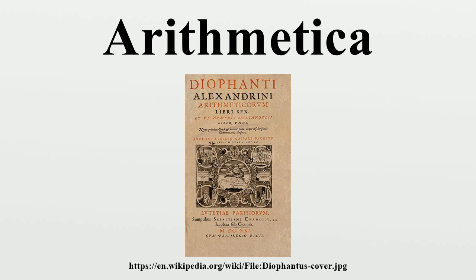In 1968, Fuat Sezgin found four previously unknown books of Arithmetica at the shrine of Imam Reza in the holy Islamic city of Mashhad in north-eastern Iran. The four books are thought to have been translated from Greek to Arabic by Qusta ibn Luqa.